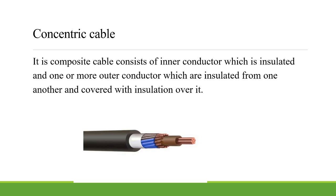The second one is concentric cable. It is a composite cable consisting of one inner conductor — this one is the inner conductor — and insulated over it. Concentric cable consists of one inner conductor which is insulated, and one or more outer conductors. These outer conductors are all insulated from each other.